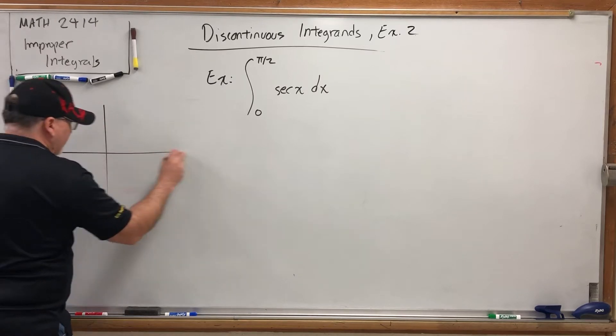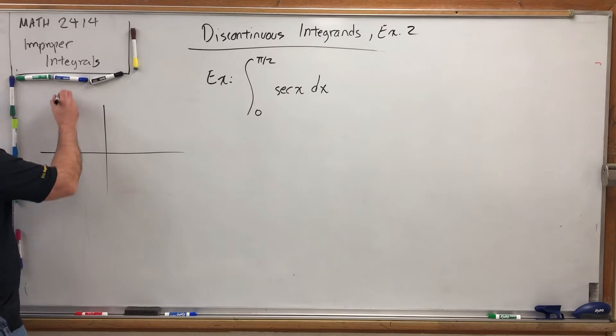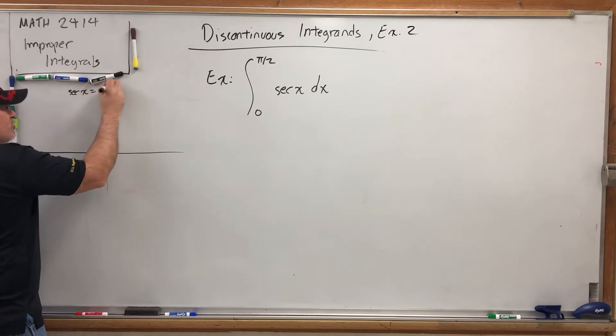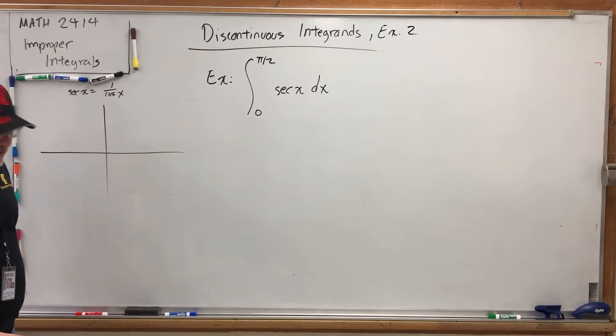Now, a lot of people don't remember what the graph of secant looks like, but here's how you can rediscover it. You just remember that secant of x is the reciprocal of cosine, and you get the graph of cosine.